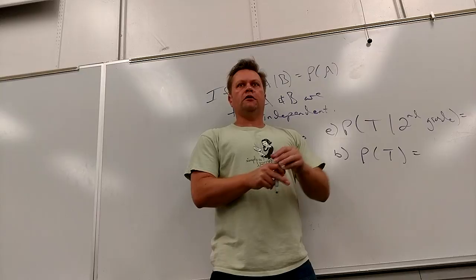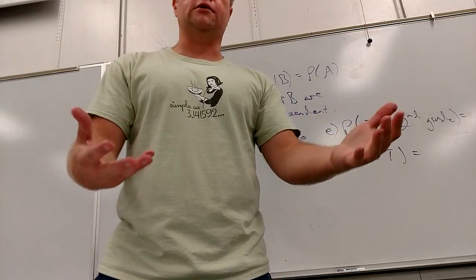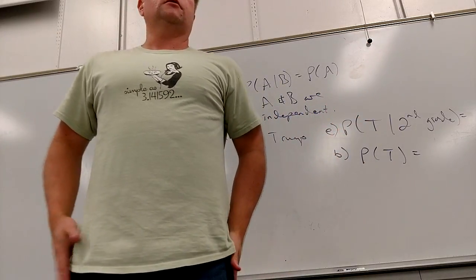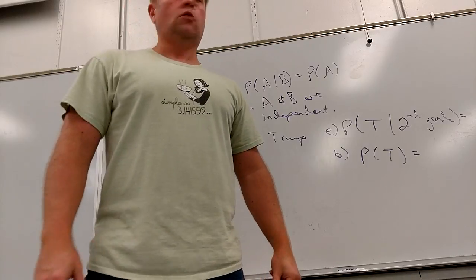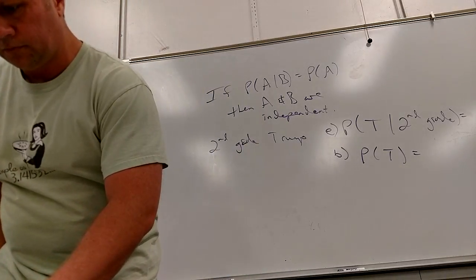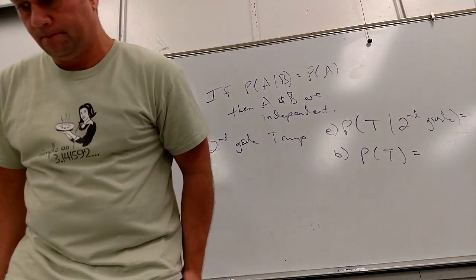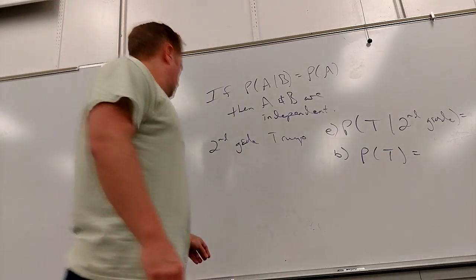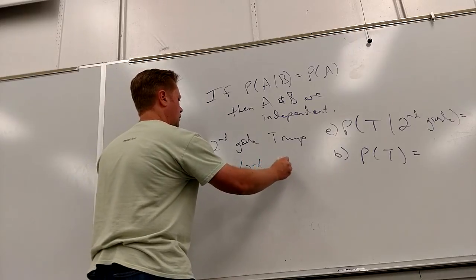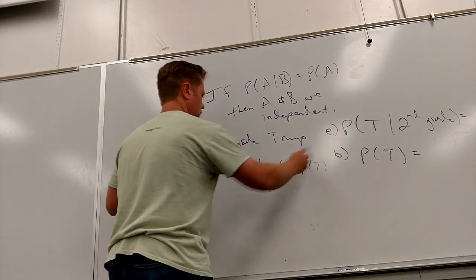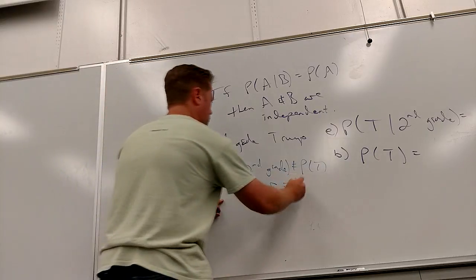Your answers for these two should be very different, which makes sense — I would expect more 8th graders to know who the president is than 2nd graders. The probability of Trump given second grade is 0.05, and the probability of Trump overall should be 0.2778. So that does not equal — they are not independent, they are dependent.